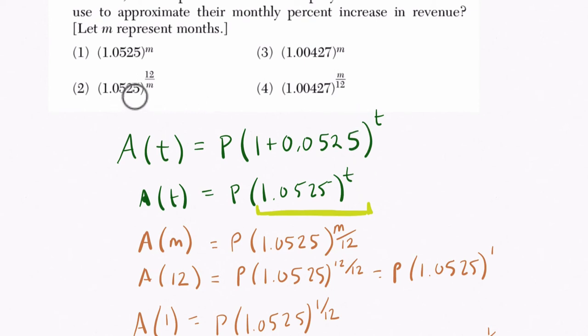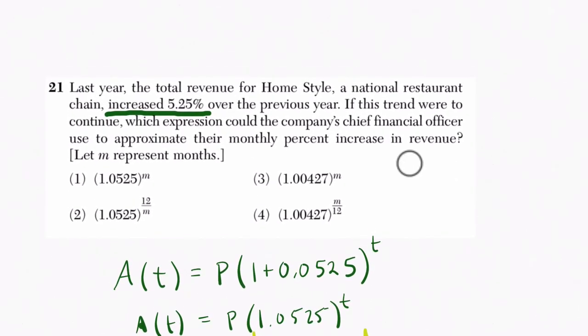Now notice here we don't see that choice. It's not even there. So have we done something wrong? No, because this is where the exponent play comes in. So we have this working expression right now, 1.0525 to the m/12th power.